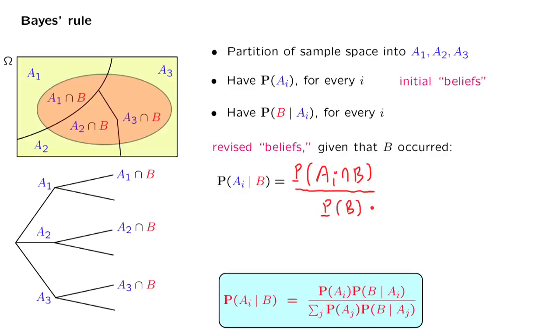So we have everything we need to calculate those revised beliefs, or conditional probabilities. And this is all there is in the Bayes rule. It is actually a very simple calculation.